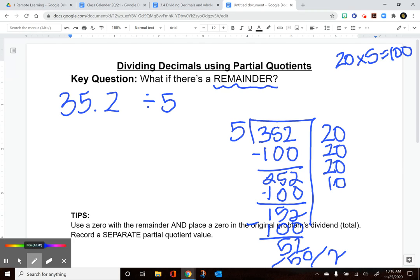With the remainder, add a zero to the remainder and also add a zero with the dividend total in the original problem. If you place it down here we have to place it up here as well. It doesn't change the value. 35.2 is the same as 35.20 or like $35 and two dimes is really twenty cents. We're not changing the value, just making it so we can split it.